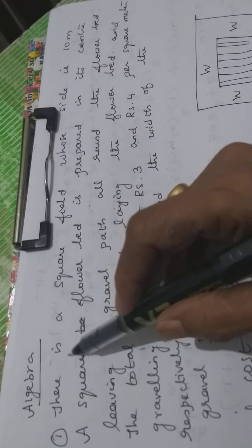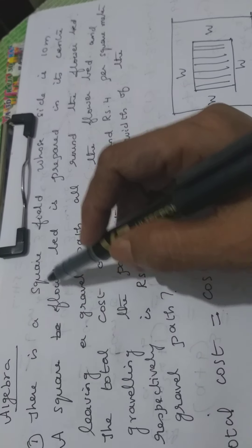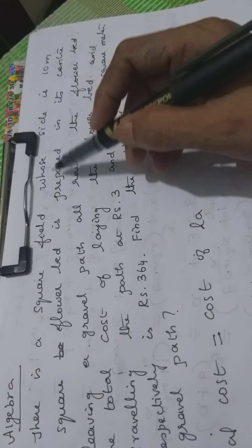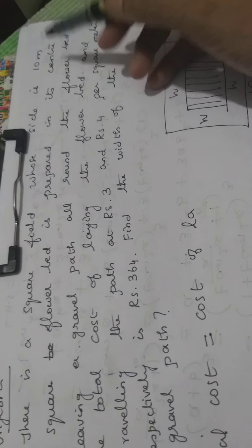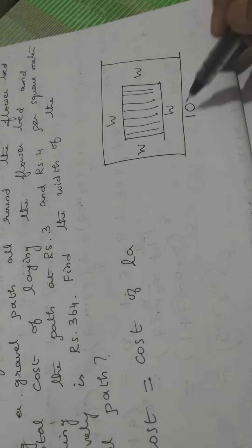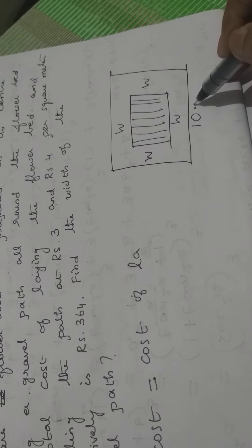In this video, we are going to do an algebra sum — a square field whose side is 10 meters. If I take the square field, the side is given as 10 meters.